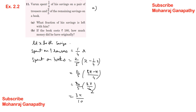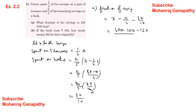What fraction of his savings is left? Total expenses are x/4 plus 3x/10. LCM is 40. So 10x plus 12x equals 22x, divided by 40. Savings left equals x minus 22x/40, which is 40x minus 22x over 40, giving 18x/40, which reduces to 9/20 of x. Fraction left is 9/20.